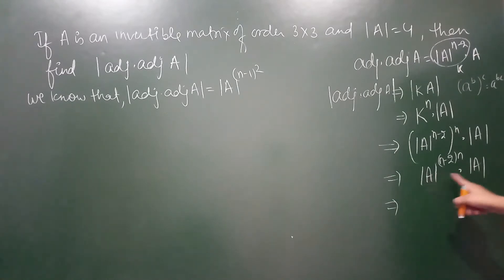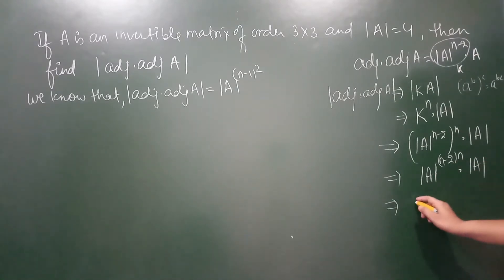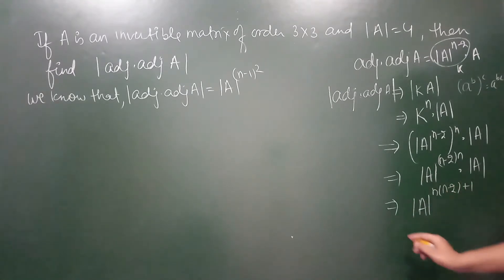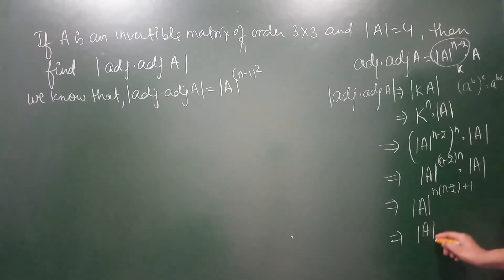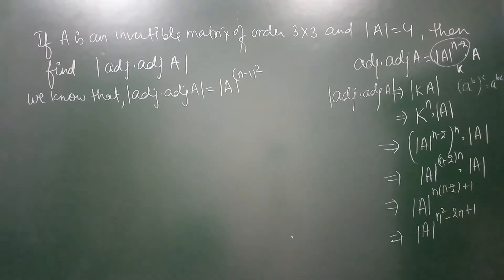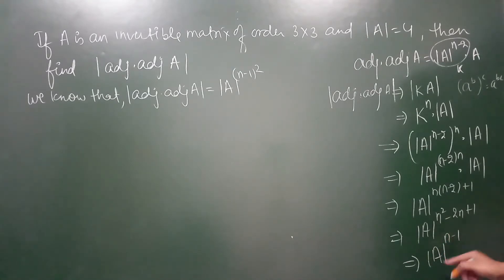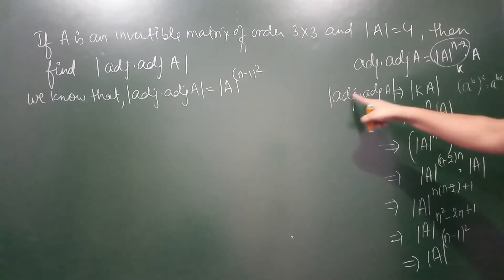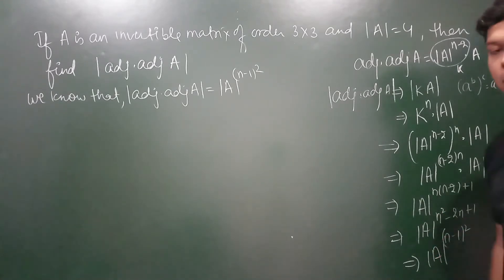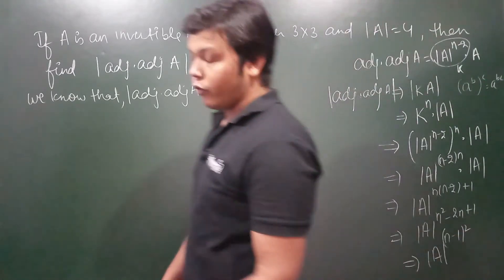So it can be written as: दो numbers same हैं तो exponents add हो जाएंगे। यह हो जाएगा determinant of A raised to the power n(n−2) + 1, यानी n²−2n+1. ध्यान से देखें — यह term n²−2n+1 expansion है (n−1)² का। So हम इसको बोल सकते हैं determinant of A raised to the power (n−1)², जहाँ n matrix का order है। इस तरह यह property हमने proof कर ली।